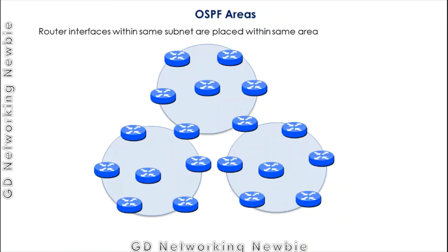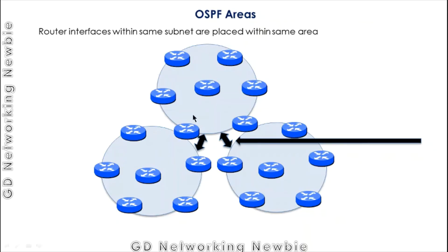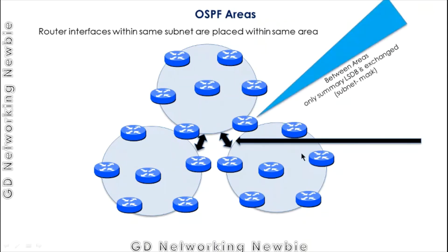Router interfaces within the same subnet are placed in the same area — this is a recommendation. To communicate between areas, there must be a mechanism for inter-area communication. Between those areas, only summary LSPs are exchanged, not the full LSDB. The summary contains information such as the subnet and mask of the other area, but the complete LSDB will not be shared, in order to reduce the burden.